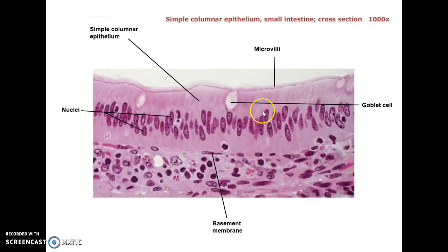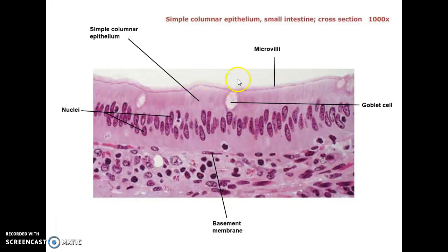Looking even more up close, you can see that nice columnar nature — the nuclei of the cells, but the cells standing tall. These are goblet cells that secrete mucus to protect the cells from the digestive enzymes or whatever else might be in the interior of the small intestines. And these are little microvilli — rare to see those very clearly on the surface of the cells.